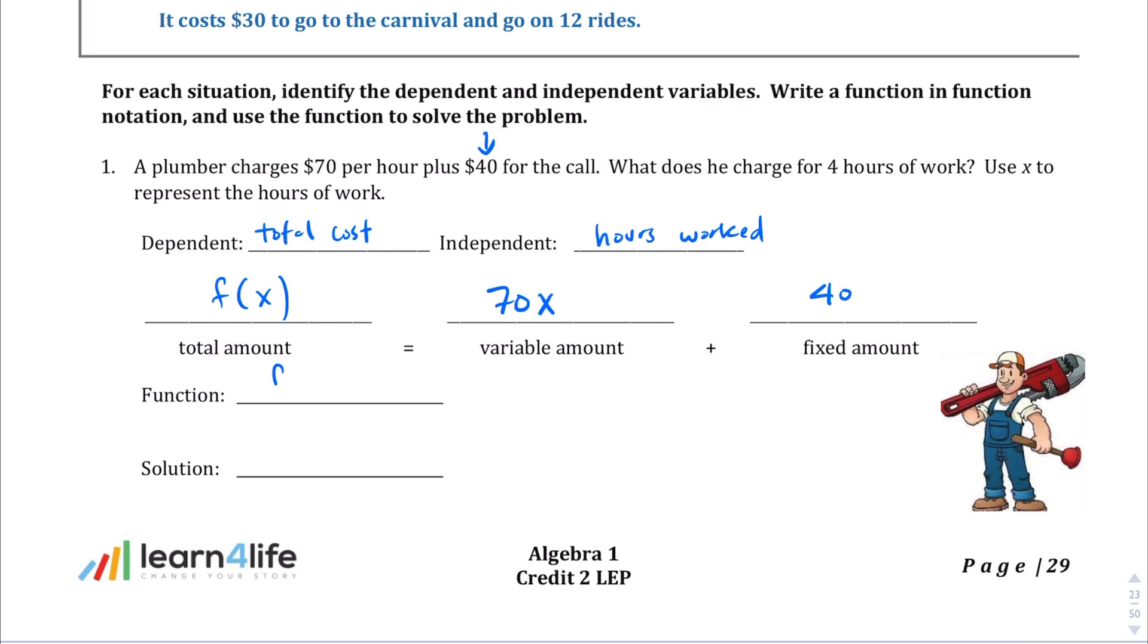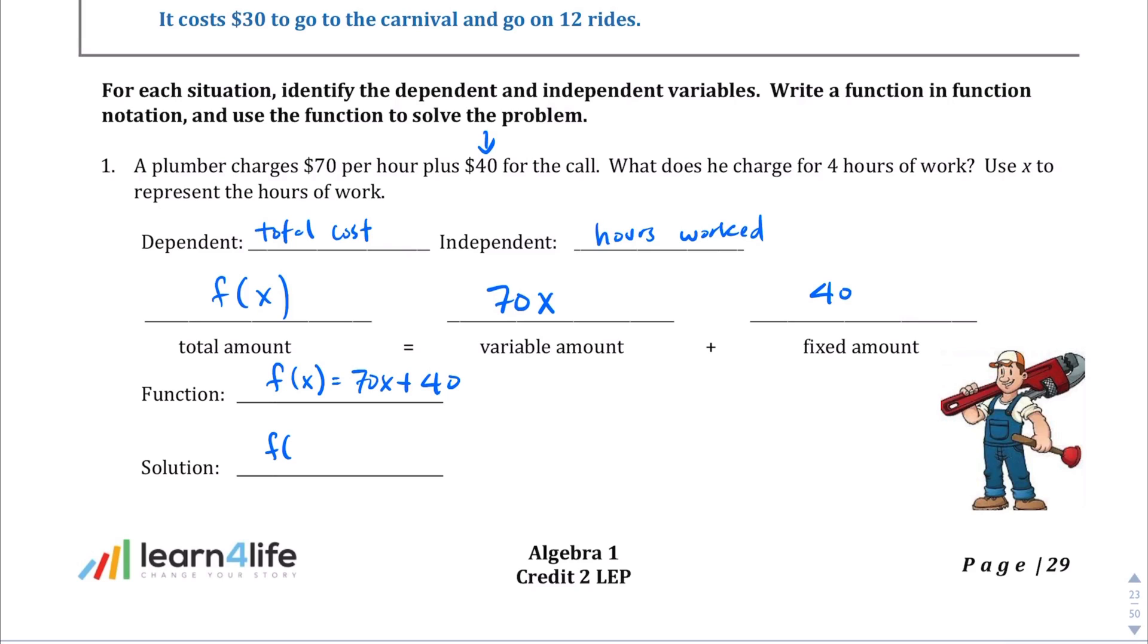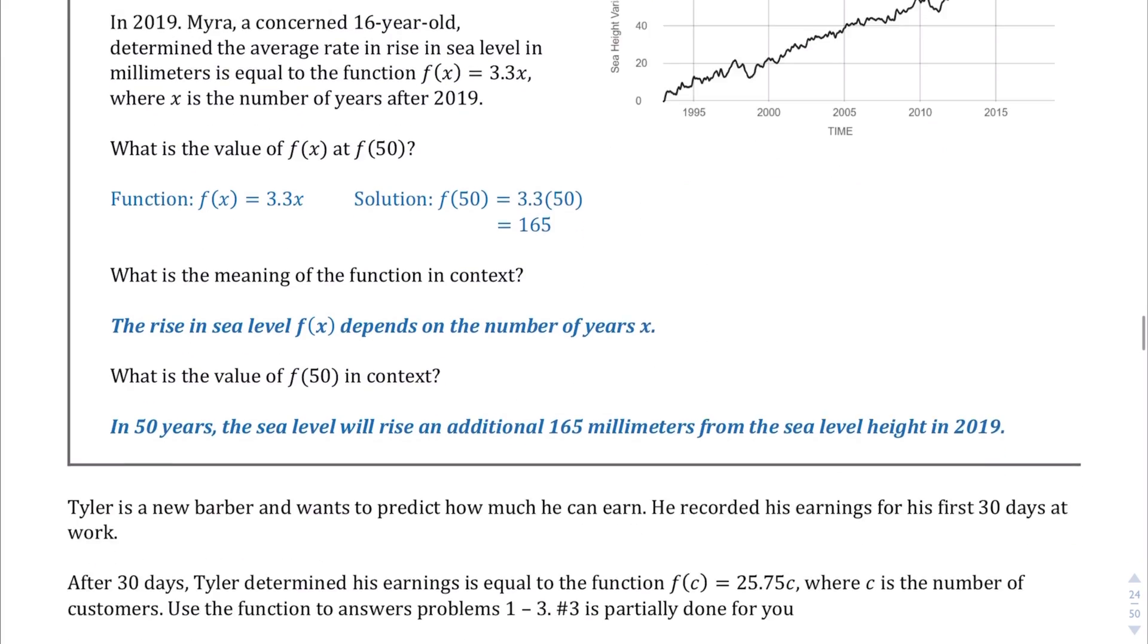So the function that we get to write is f(x) equals 70x plus 40. And then the solution: we want to know how much does he charge for four hours work. Well, we just plug four into that. So f(4) equals 70 times 4 plus 40. Let's go ahead and solve that. f(4) equals 70 times 4, which is 280, plus 40, which ends up being $320. So for four hours of work, the plumber will charge you $320.